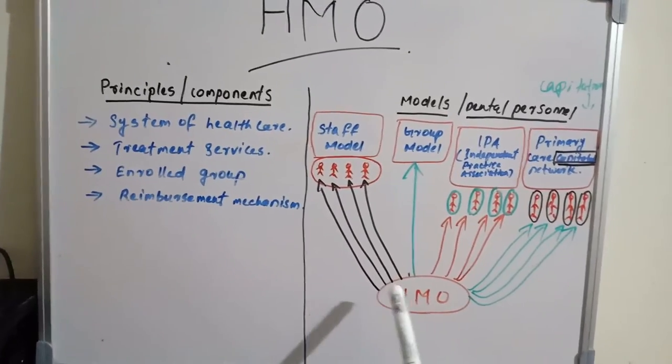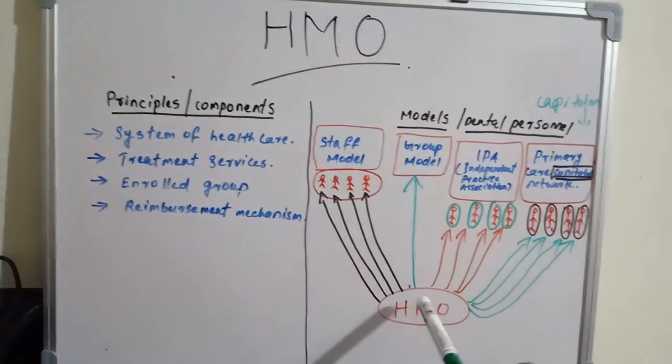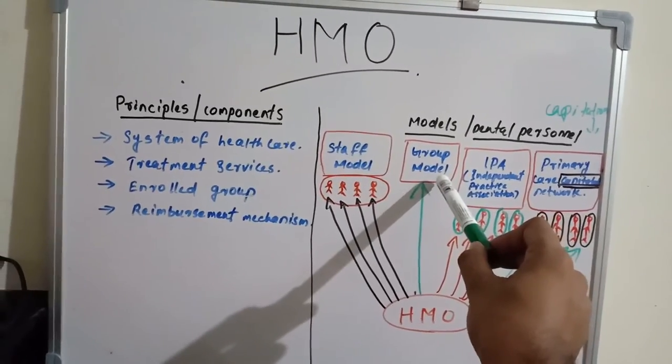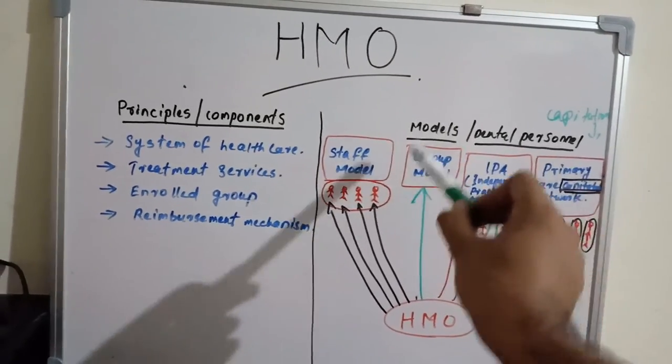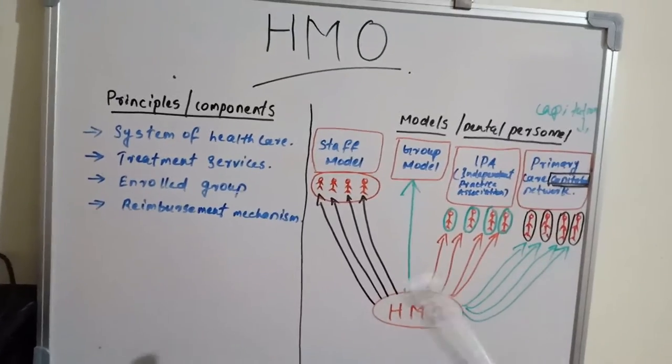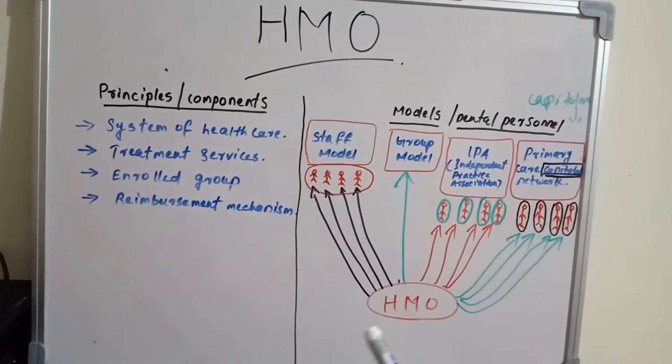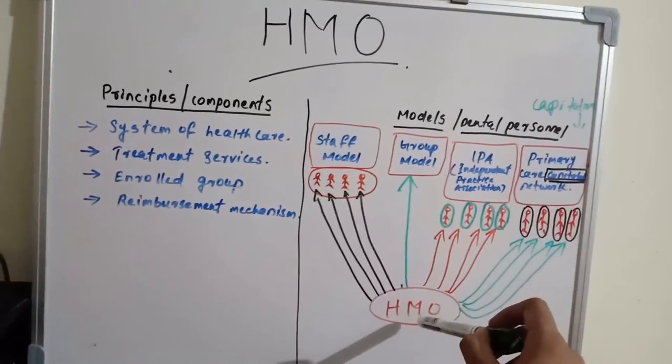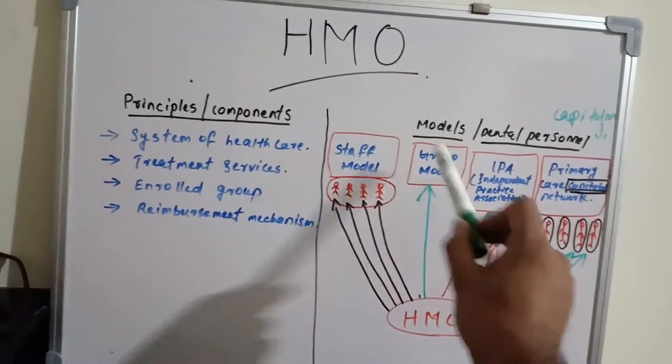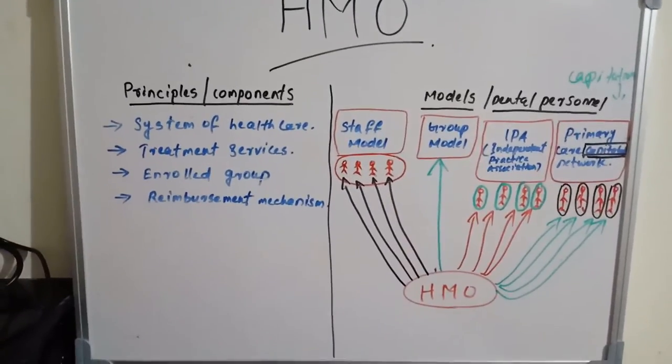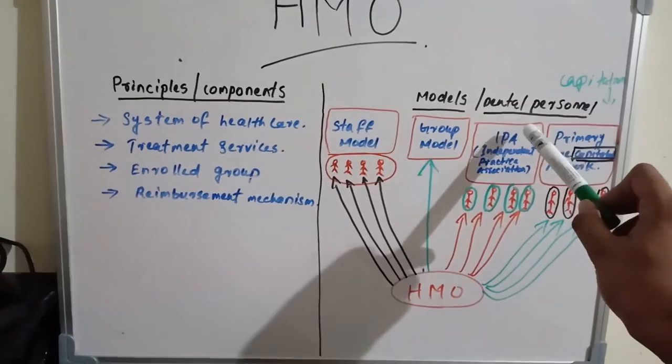But in group model, the HMO pays a bulk amount and the group model will distribute the amount with themselves. But HMO pays a single bulk amount to the group model. The third one is independent practice association.